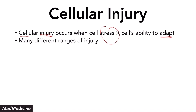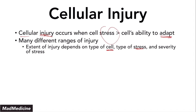Now, there are many different ranges of injury, and essentially it depends on the type of cell, the type of stress, but mainly, more specifically, it depends on the severity of the stress. The severity is going to be the main defining factor of whether or not a cell can handle a stressor.